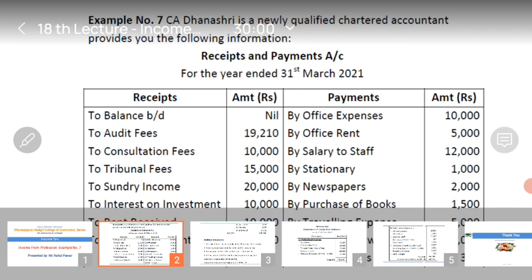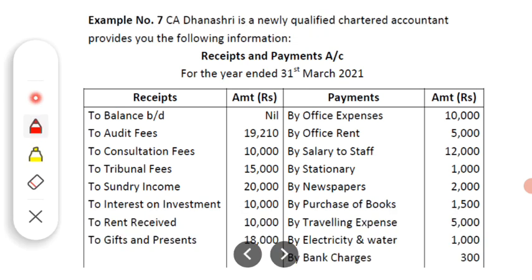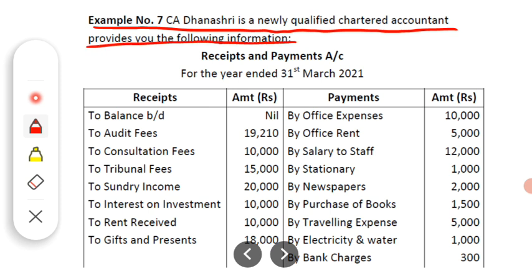This is example number 7. Read the example carefully. CA Dhanashri is a newly qualified chartered accountant who provides the following information. In this sentence, two things are important: first, the name of the person — Dhanashri — and second, she is a chartered accountant by profession.